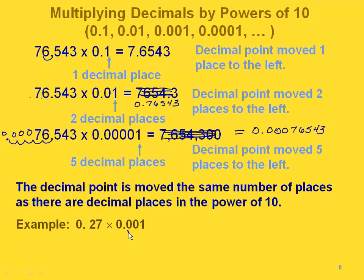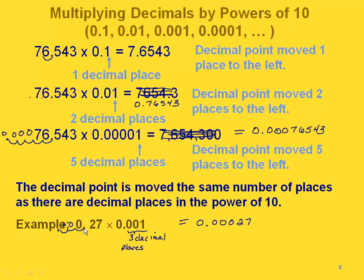Let's do one more example. In this one, we have three decimal places, so we're moving our decimal point three places to the left. Starting with 0.27, we move one place, two places, three places — our decimal point goes right there. We have to write zeros in those positions. Then we check by going back to our original factor and confirming we moved exactly three places: one, two, three. Yes, we did.